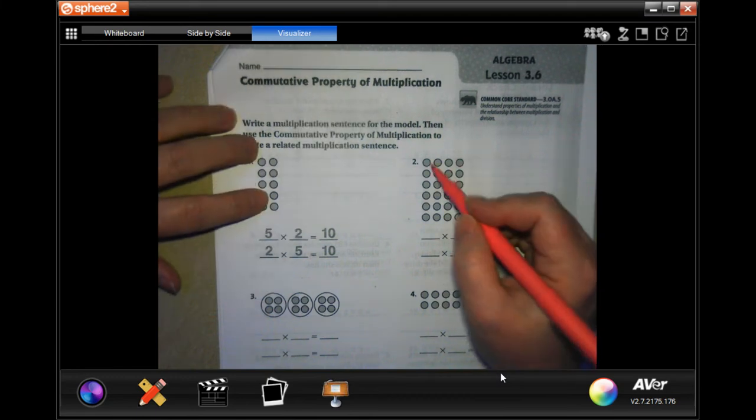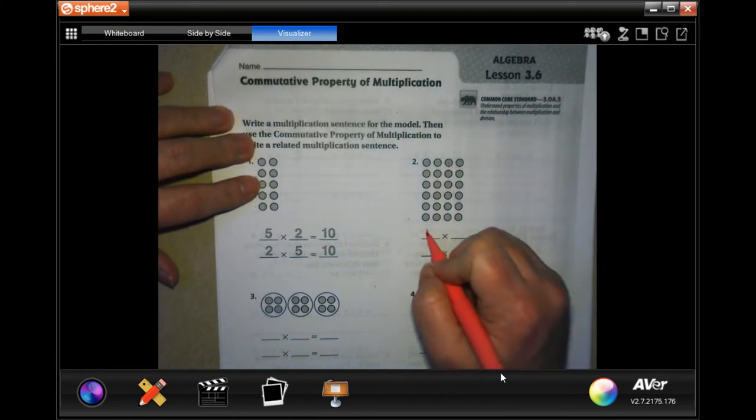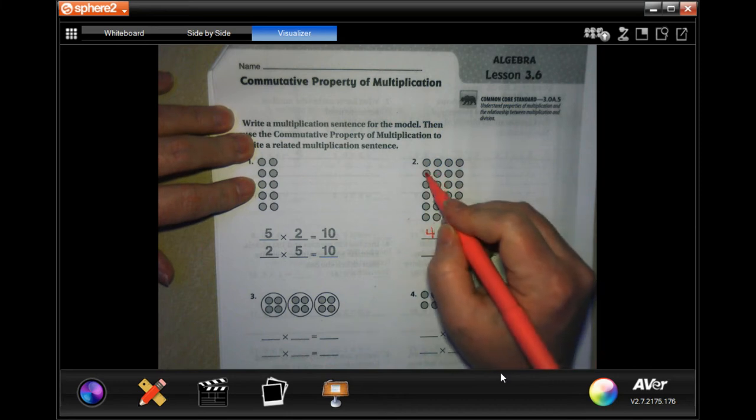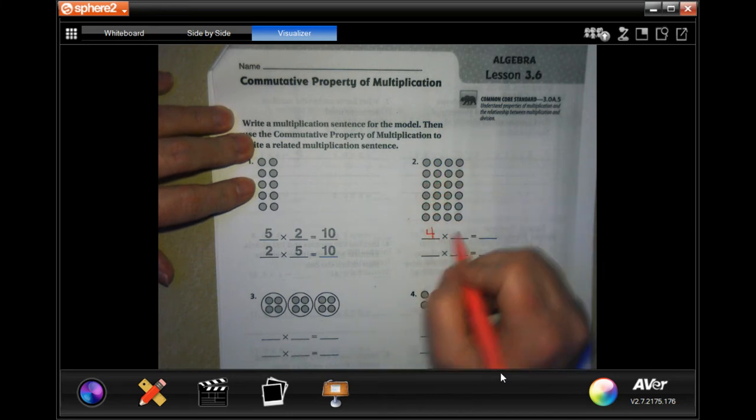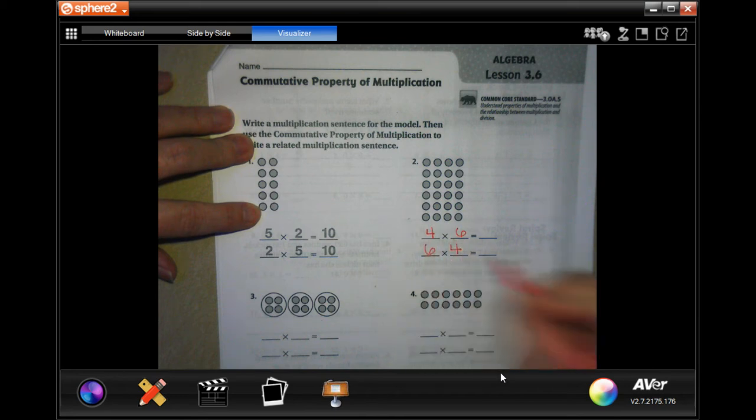All we're going to do right now is count how many down and how many across. So 1, 2, 3, 4 across. And 1, 2, 3, 4, 5, 6 down. Now for the next one down, we're just going to swap those numbers. That's with the commutative property.